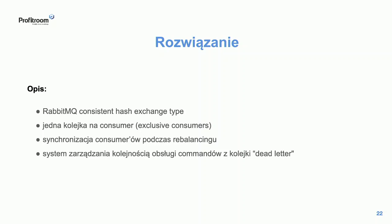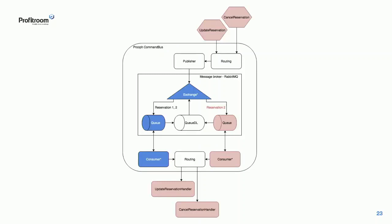To jest pierwsza grupa rozwiązań, którą daje nam sam RabbitMQ – Kafka ma coś podobnego. Zaczyna się wtedy kod, który musimy napisać sami i którego na razie chyba żadna biblioteka nie ma. Pierwsza rzecz to synchronizacja konsumerów podczas rebalancingu. Druga rzecz to system, który pozwoli poprawnie obsłużyć komendę ze względu na to, co jest na dead letter queque.